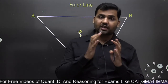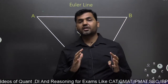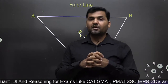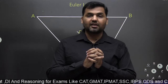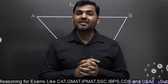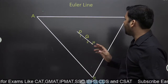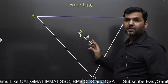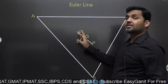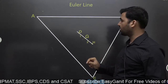All the links of the previous episodes are given in the description part of the video. Please subscribe to the channel to get updates on all the videos I will be uploading for your competitive exams. Now, Euler line is about three centers of the triangle. What are these three centers? Circumcenter, centroid, and orthocenter.